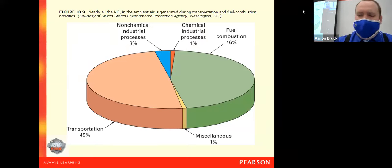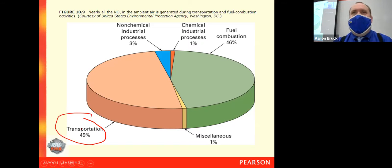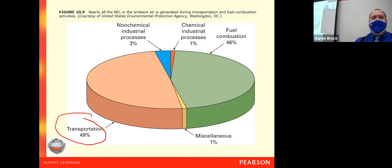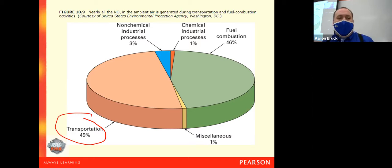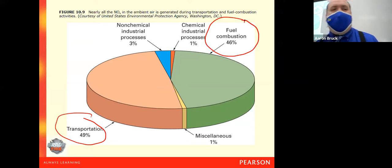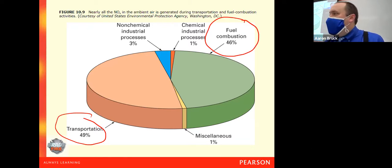One of those areas is transportation, which is probably the most common. We think of it from processes where we have heavily populated cities with a lot of people, a lot of cars, a lot of moving around, and NOx gases get put out from that. We also see a big portion coming from fuel combustion. If you think of both of them together, that's 95% of the NOx gases that are produced.